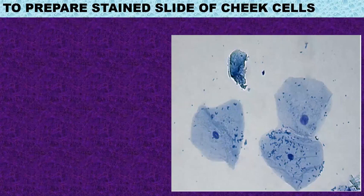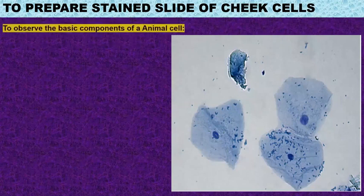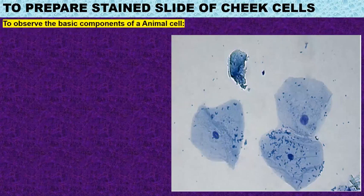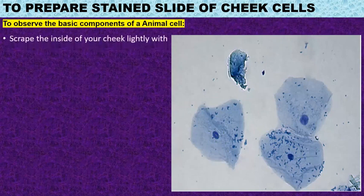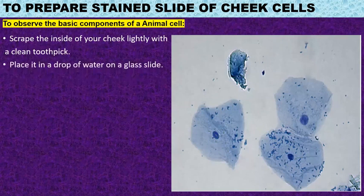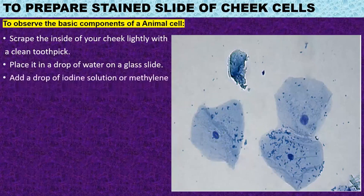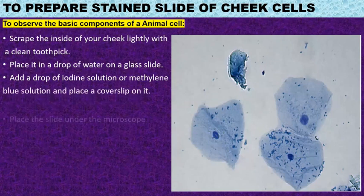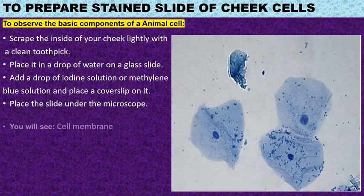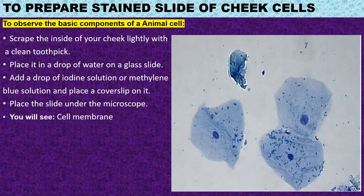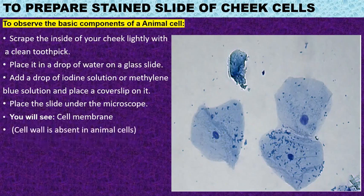We can also prepare a stained slide of cheek cells. Here we will observe the basic components of an animal cell. Scrub the side of your cheek lightly with a clean toothpick and place it in a drop of water on a glass slide. Add a few drops of iodine solution or methylene blue solution and place a cover slip on it. Place the slide under the microscope. You will observe a cell membrane. The cell wall is absent in animal cells. You will also observe the nucleus and cytoplasm.